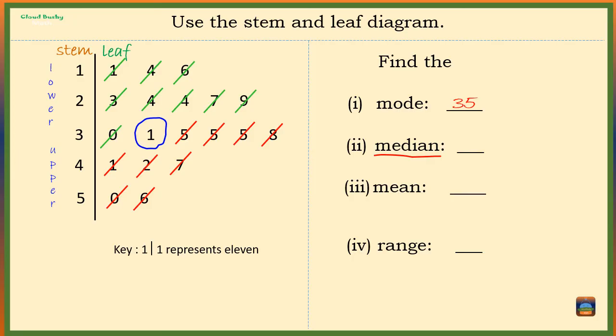So the median is 31. Note here that we only count the numbers that are on the leaf side of the diagram. We have nine digits before 31 which is our median, and nine digits after the median. The median is 31.